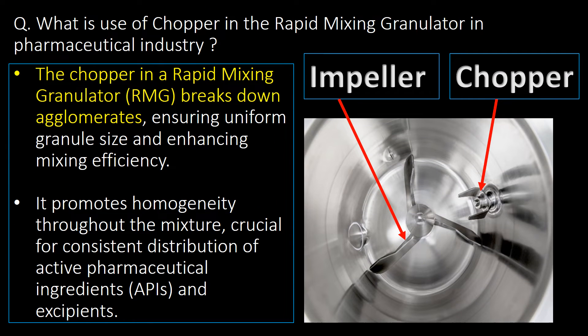What is the use of the chopper in Rapid Mixing Granulator? The chopper in Rapid Mixing Granulator breaks down agglomerates, ensuring uniform granule size and enhancing mixing efficiency. It promotes homogeneity throughout the mixture, which is crucial for consistent distribution of APIs and excipients.